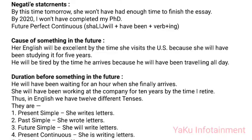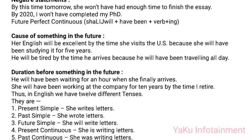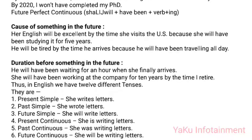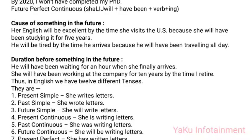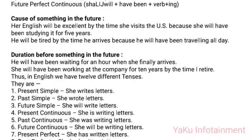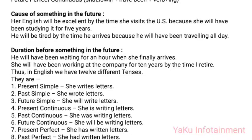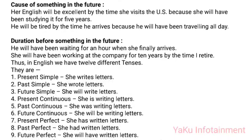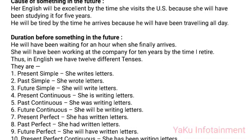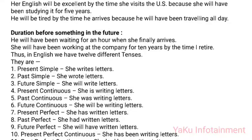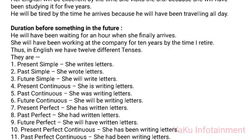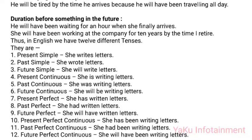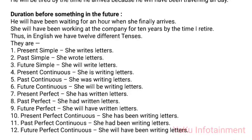In English we have 12 different tenses: (1) Present Simple — she writes letters. (2) Past Simple — she wrote letters. (3) Future Simple — she will write letters. (4) Present Continuous — she is writing letters. (5) Past Continuous — she was writing letters. (6) Future Continuous — she will be writing letters. (7) Present Perfect — she has written letters. (8) Past Perfect — she had written letters. (9) Future Perfect — she will have written letters. (10) Present Perfect Continuous — she has been writing letters. (11) Past Perfect Continuous — she had been writing letters. (12) Future Perfect Continuous — she will have been writing letters.